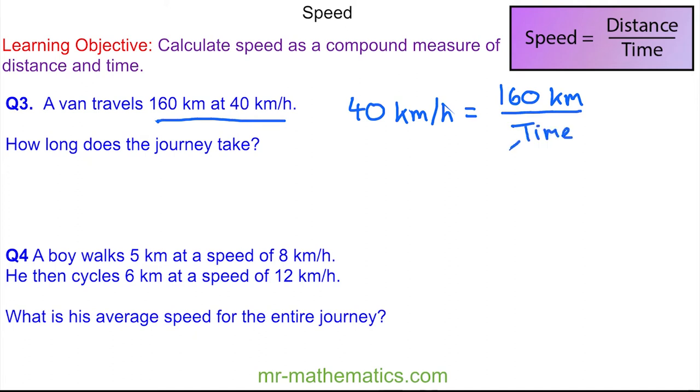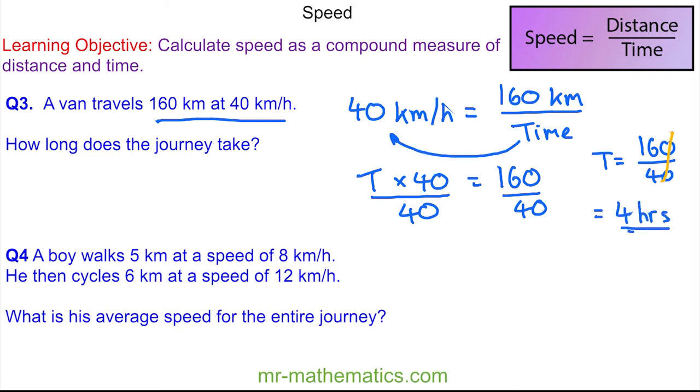So we'll move the time to the left hand side. So the time multiplied by 40 is equal to 160. We divide both sides by 40, so the time is 160 divided by 40. We can simplify this fraction by dividing both by 10, and 16 divided by 4 is 4. So the total time is 4 hours.